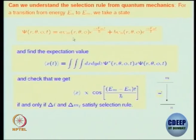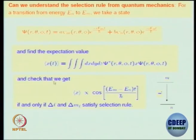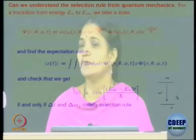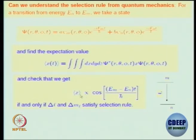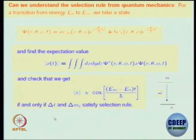If you do it in the three-dimensional hydrogen atom problem, you formally have quantum numbers (N₁, L₁, M_{L1}) and (N₂, L₂, M_{L2}) and do the integration over the volume to find the expectation value of the radial coordinate. It will depend on cos ωt — proportional to the energy difference between those two levels — and it will be non-zero only if ΔL = ±1.